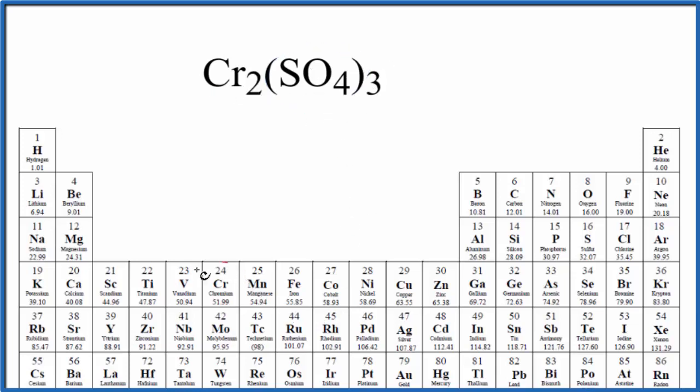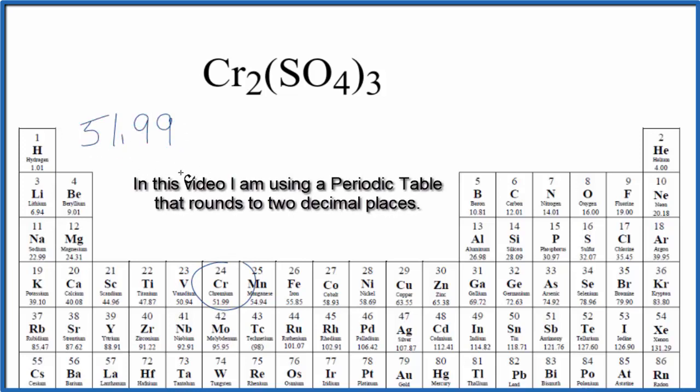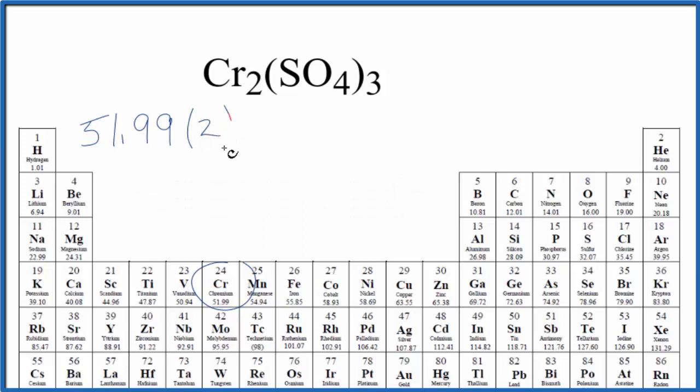On the periodic table we find chromium that's 51.99 grams per mole. I won't write that each time. Let's just write grams per mole at the end. We have two of these chromium atoms, we'll multiply that by two.